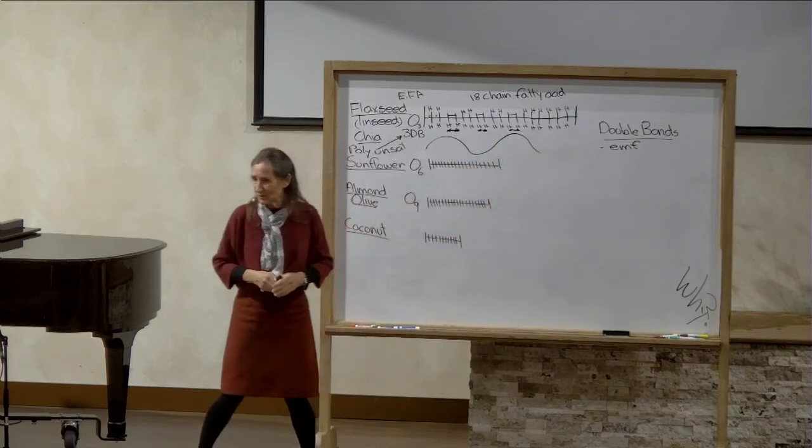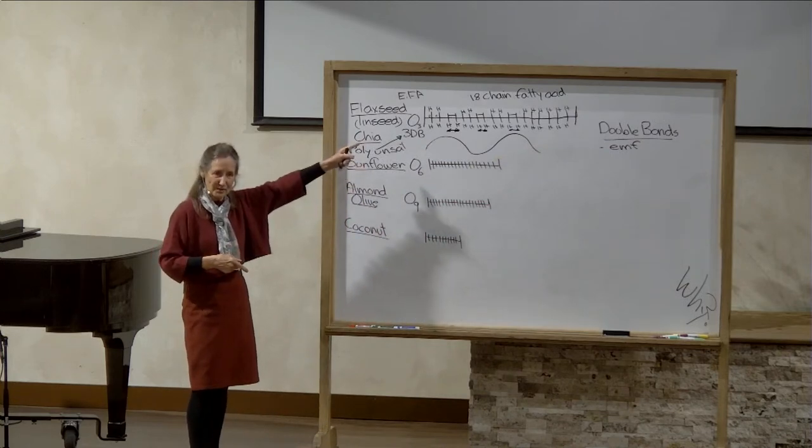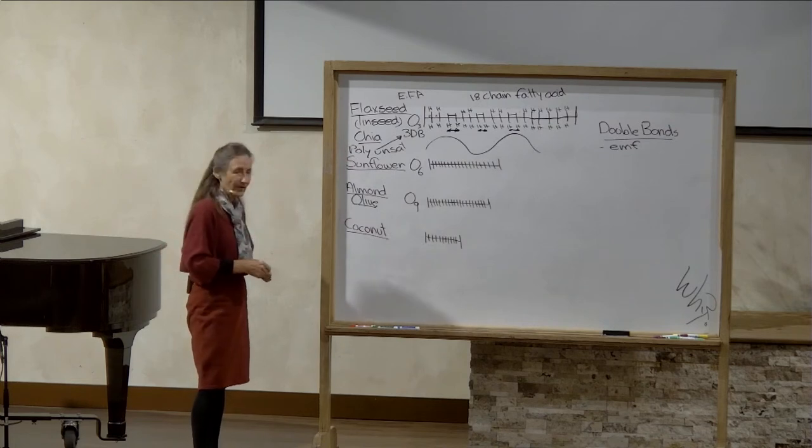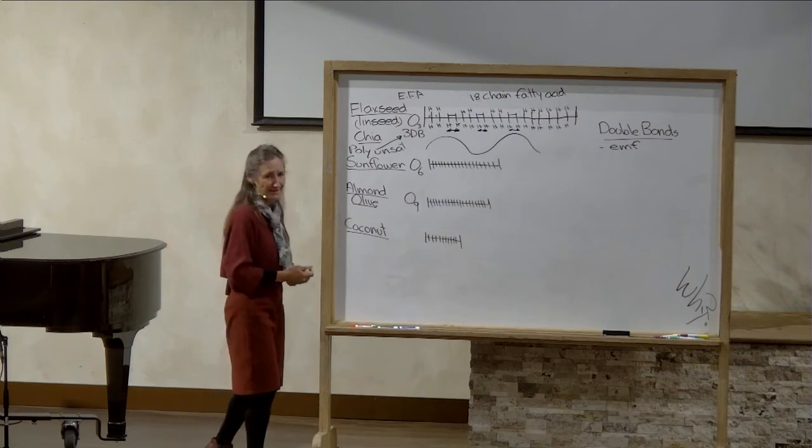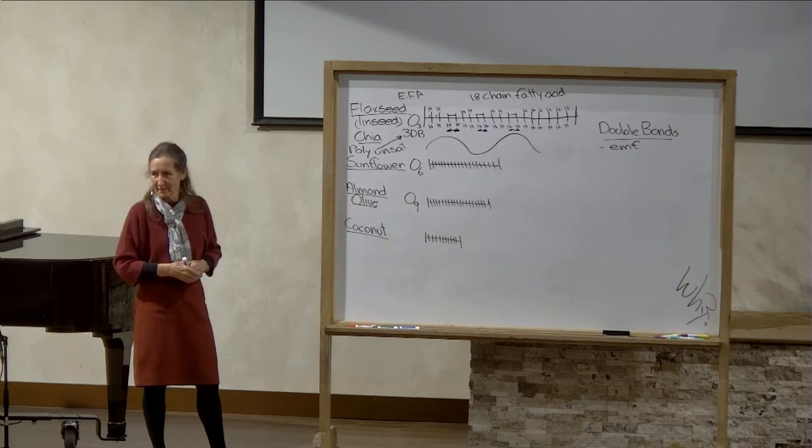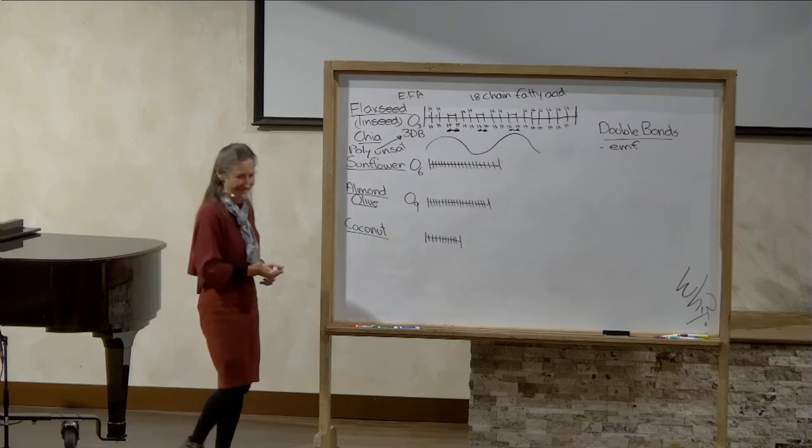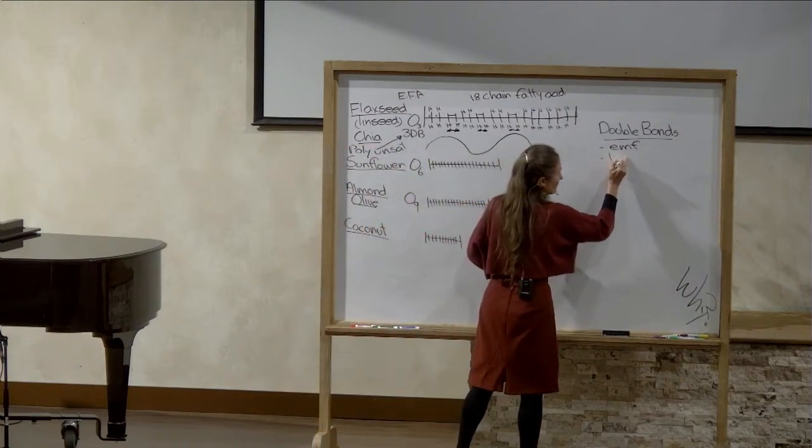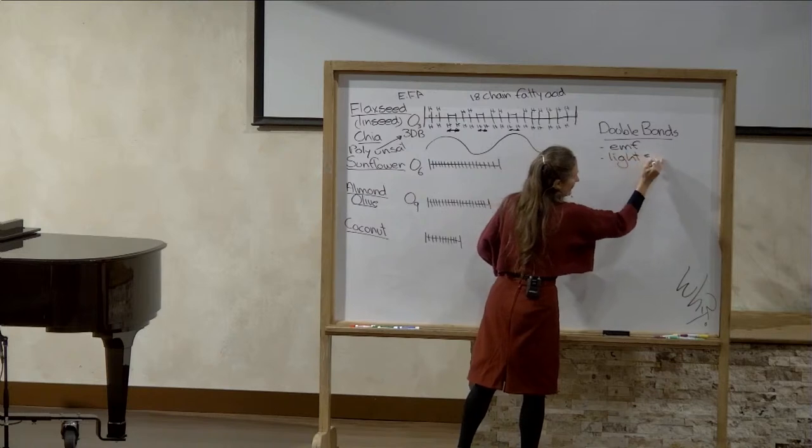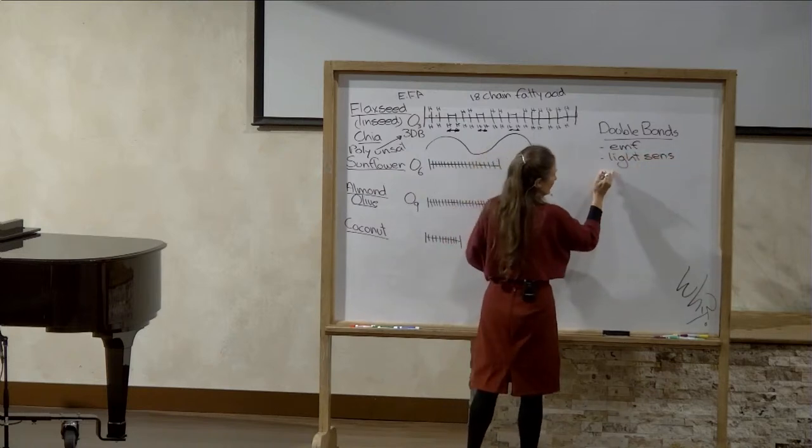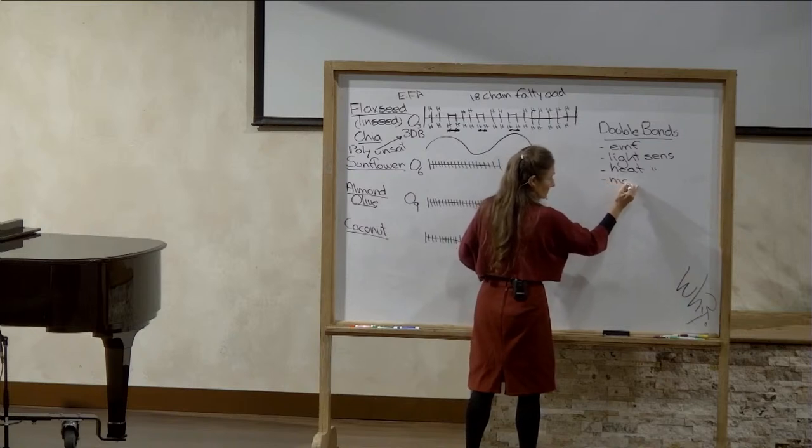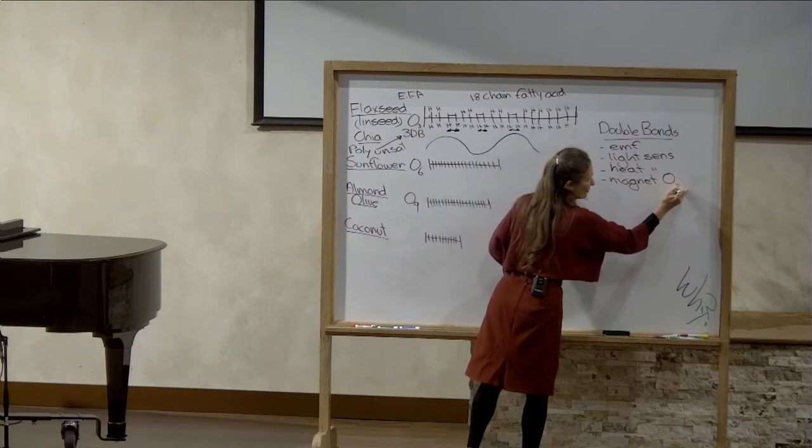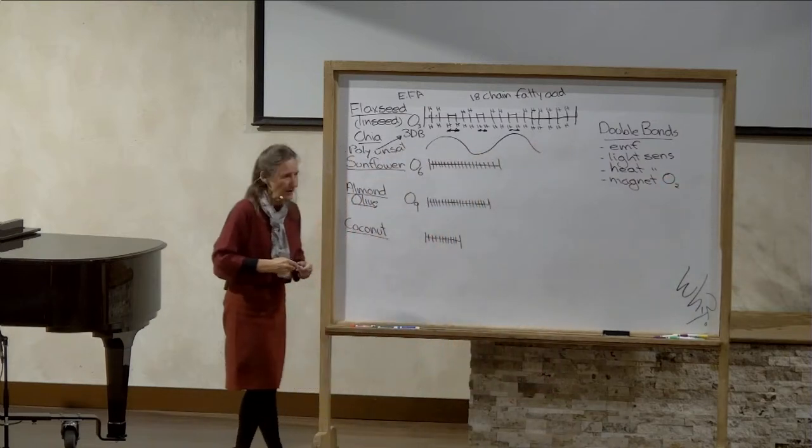Dr. Neil Nedley in his book Depression A Way Out spends quite a bit of time on omega-3 showing the importance for mental health. I think God's got a sense of humor because the nut that is the highest in omega-3 looks like the brain - that's your walnut. Double bonds are also light sensitive, which means they help us absorb more vitamin D. They are heat sensitive, helping us manage our heat. And they act like a magnet to oxygen. Oxygen is the most vital element needed for life. What an amazing oil.